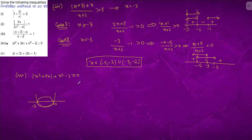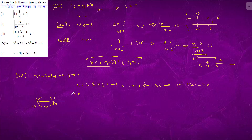When x < -3 or x > 0, we have x²+3x + x²-2 ≥ 0, which simplifies to 2x²+3x-2 ≥ 0. When -3 ≤ x < 0, we have -3x - 2 ≥ 0.